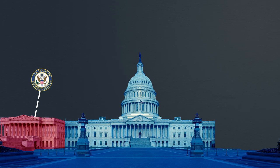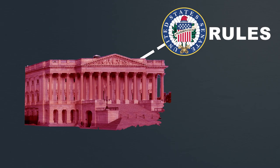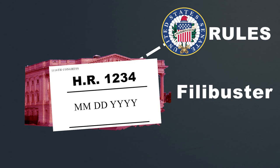In Congress, both the House and the Senate make their own rules on how they will go about creating laws. In the Senate, one of the most talked about rules is the filibuster. The filibuster is a tactic used in the Senate to delay or stop a bill from getting passed.